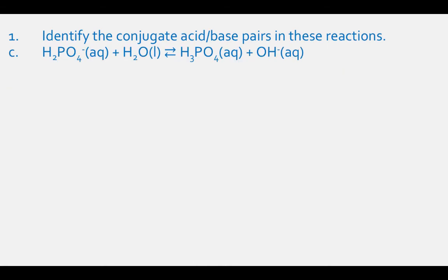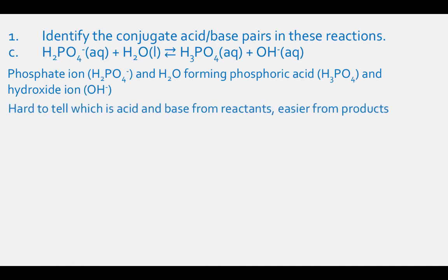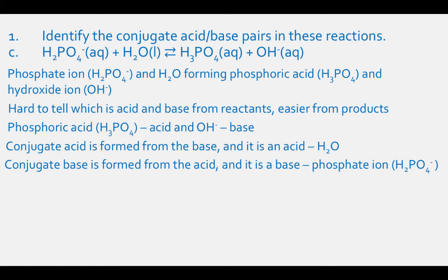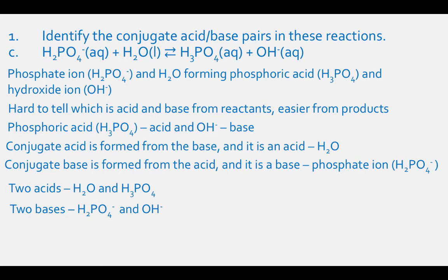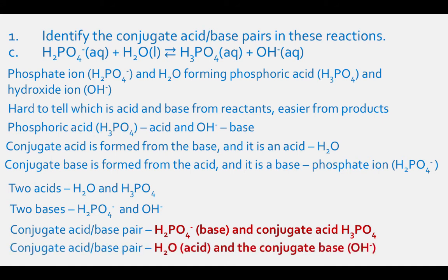For letter C, we have the phosphate ion H2PO4- and H2O reacting to form phosphoric acid H3PO4 and the hydroxide ion OH-. Looking at the products, phosphoric acid is the acid and the hydroxide ion is the base. The conjugate acid is formed from the base — this is water. The conjugate base is formed from the acid — this is the phosphate ion H2PO4-. There are two acids: H3PO4 and water. There are two bases: OH- and H2PO4-. One conjugate pair is H2PO4- (the base) and H3PO4 (the conjugate acid). The other pair is water (the acid) and OH- (the conjugate base).